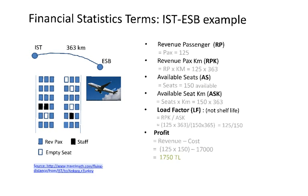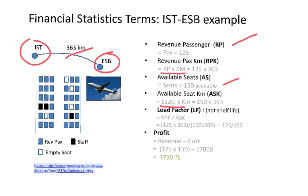Continuing with our example: Revenue Passengers (RP) is 125. Revenue Passenger Kilometers (RPK) means we take the revenue passengers and multiply by the distance — in this case 363 kilometers between Ankara and Istanbul. Available Seats (AS) is 150. Available Seat Kilometers (ASK) is calculated by multiplying the seats by the distance. Load Factor (LF) is then calculated as Revenue Passenger Kilometers divided by Available Seat Kilometers.